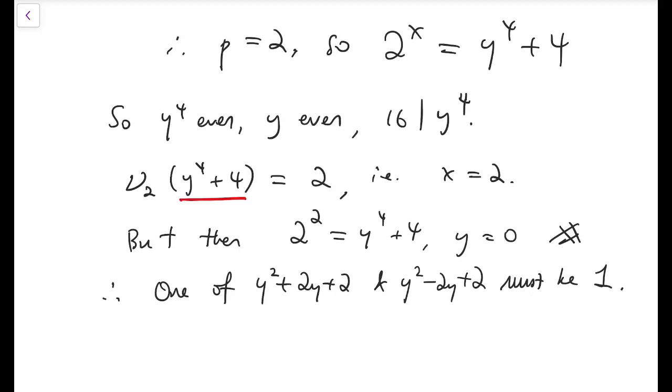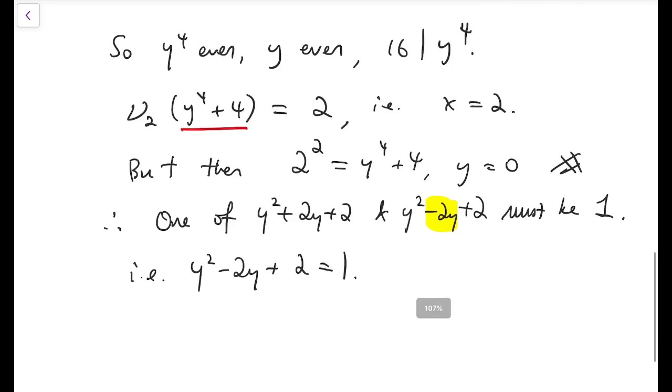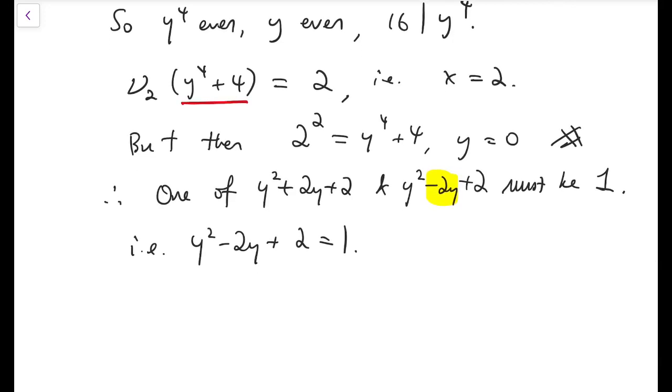And it's pretty obvious that it should be the smaller one, the smaller polynomial to be 1, which is this, because we are doing minus 2y. You know, the y is positive.